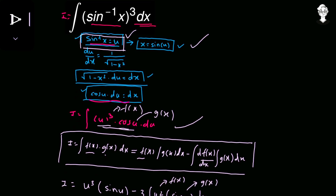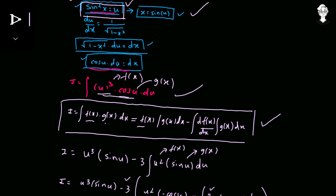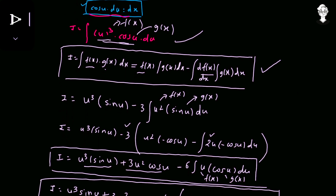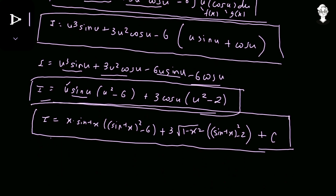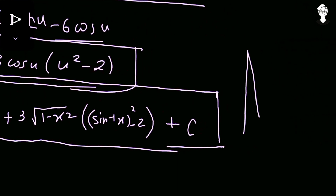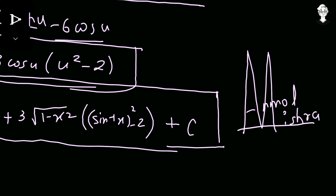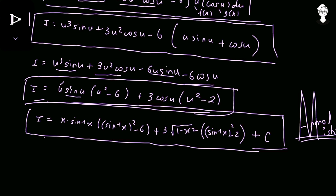We started with the substitution method, then applied the integration by parts formula three times, and finally replaced u back with sin inverse x to get the final answer. This was the method to solve this integral. If there is another method, do comment below, or email or DM on Instagram — links are in the description.